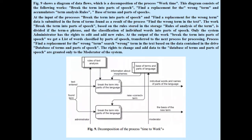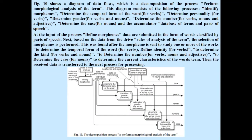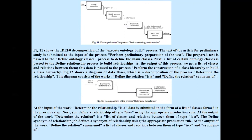Figure 9 shows a diagram of data flows which is the decomposition of the process perform morphological analysis of the term. Figure 11 shows the IDEF0 decomposition of the execute ontology build process. The text of the article for preliminary study is submitted to the input of the process perform the preliminary preparation of the text. The text is passed to the define ontology classes process to define the main classes. Next, a list of ontology classes is passed to the define relationship process to build relationships. At the output of this process we get a list of classes and relations between them.